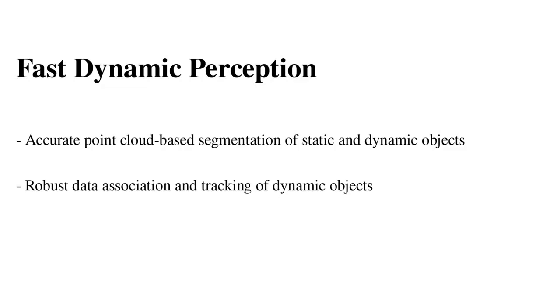The first part of the system is a fast dynamic perception method. The algorithm can efficiently distinguish between static and dynamic objects using only point cloud data.